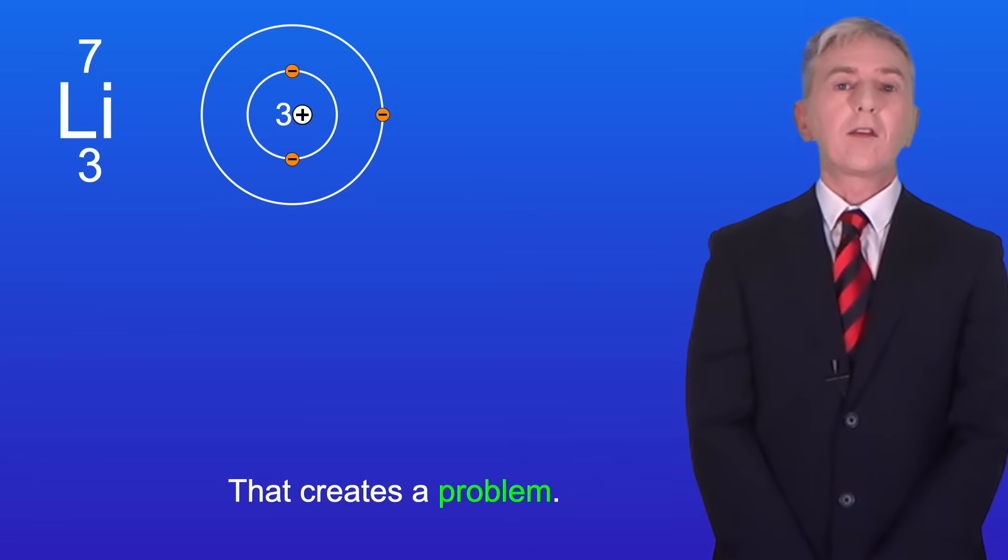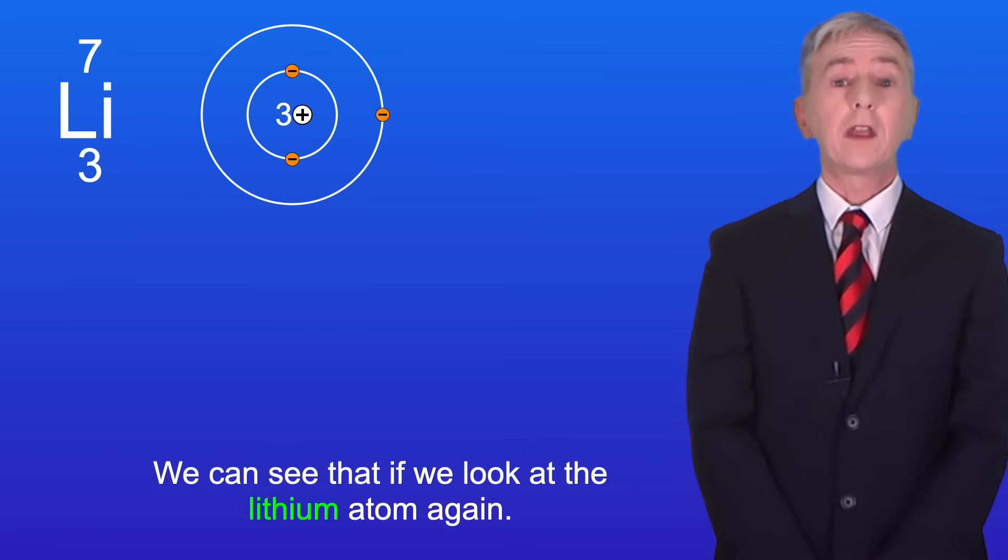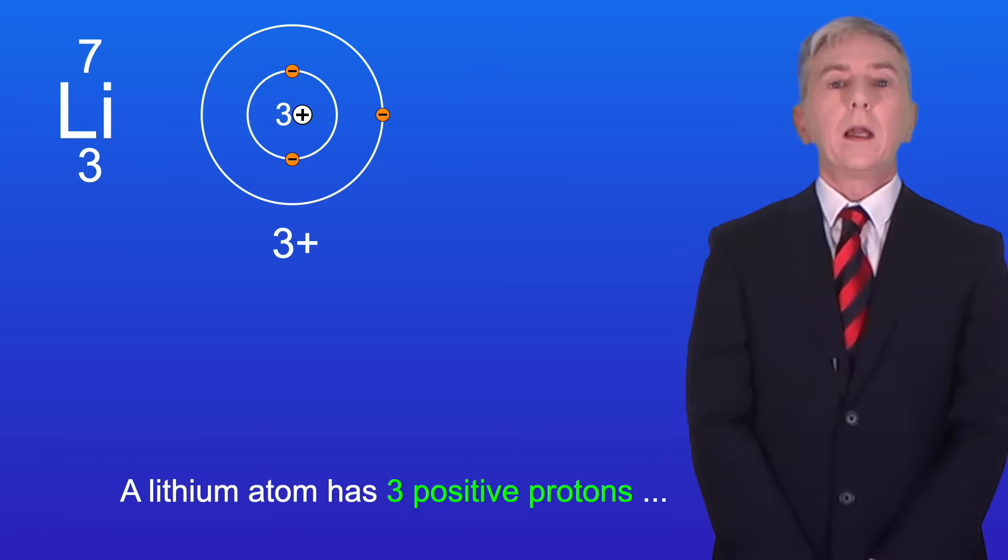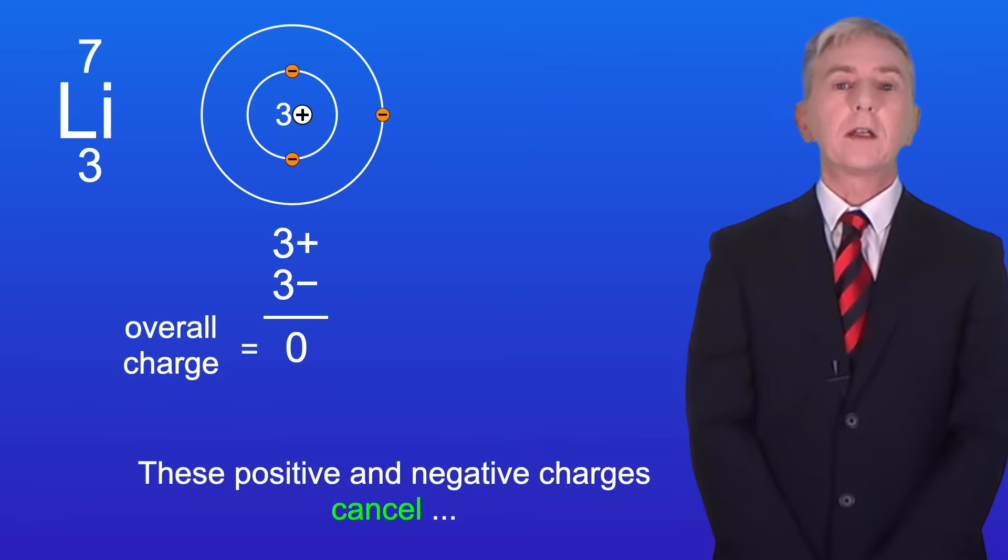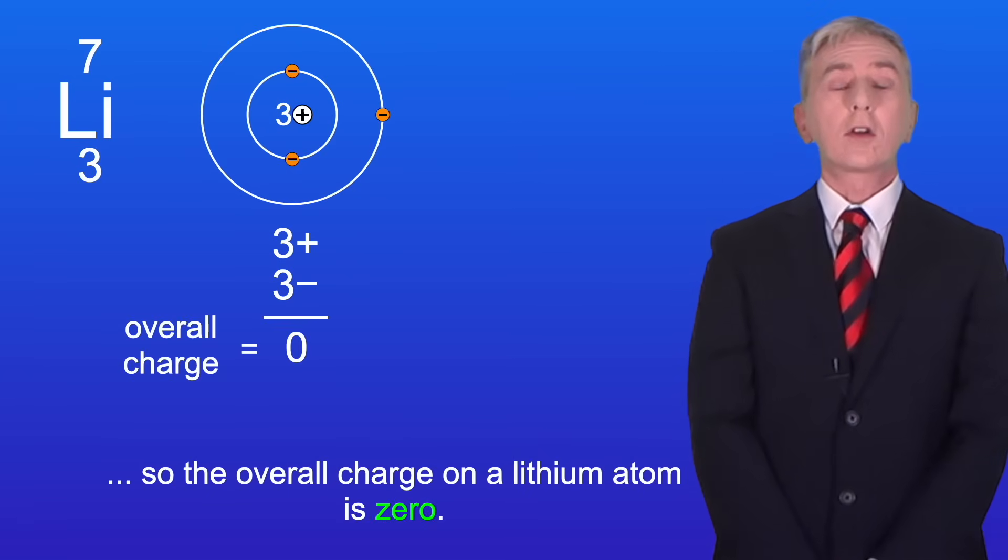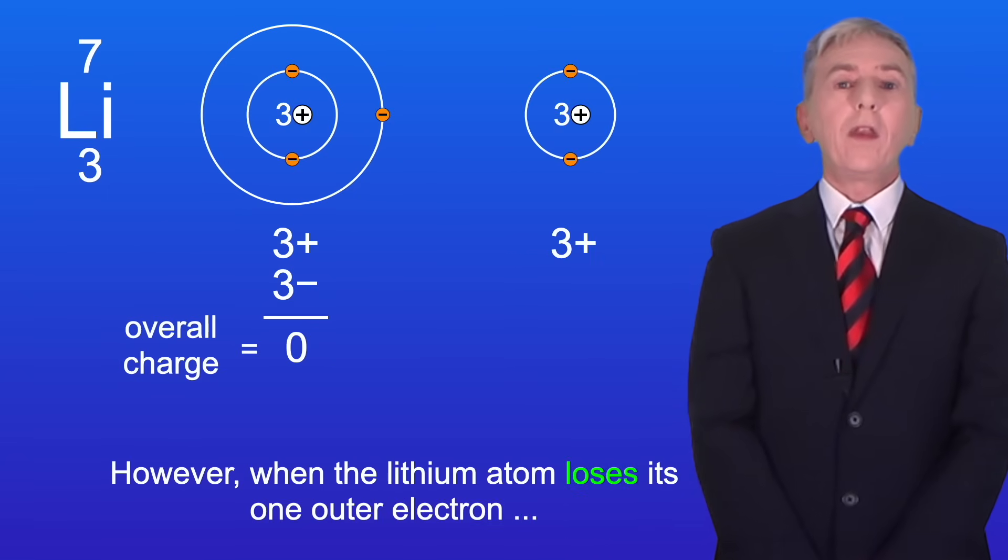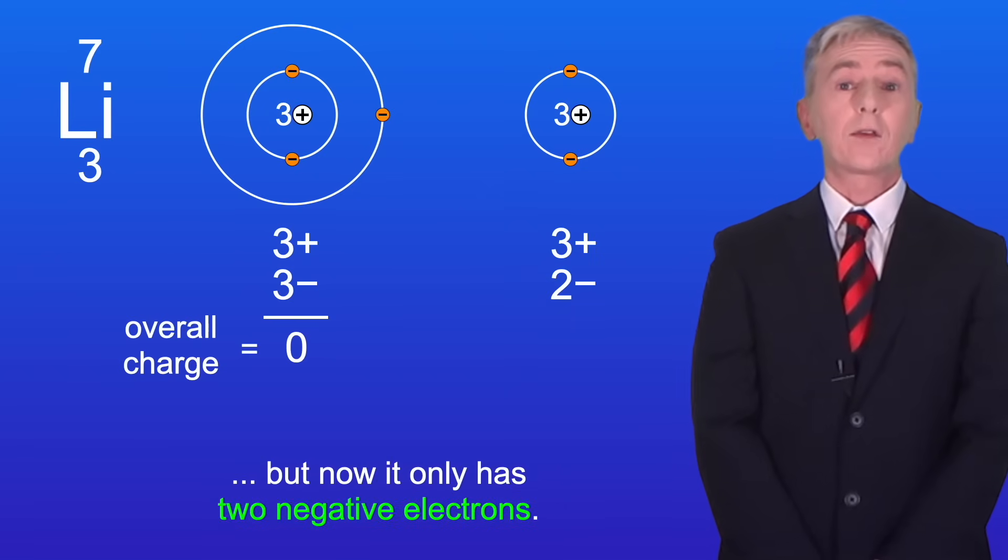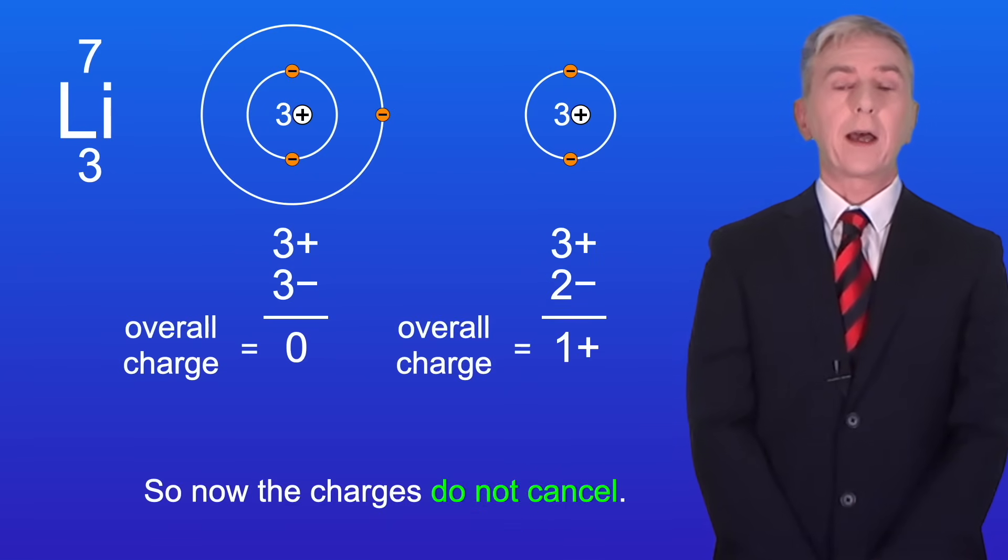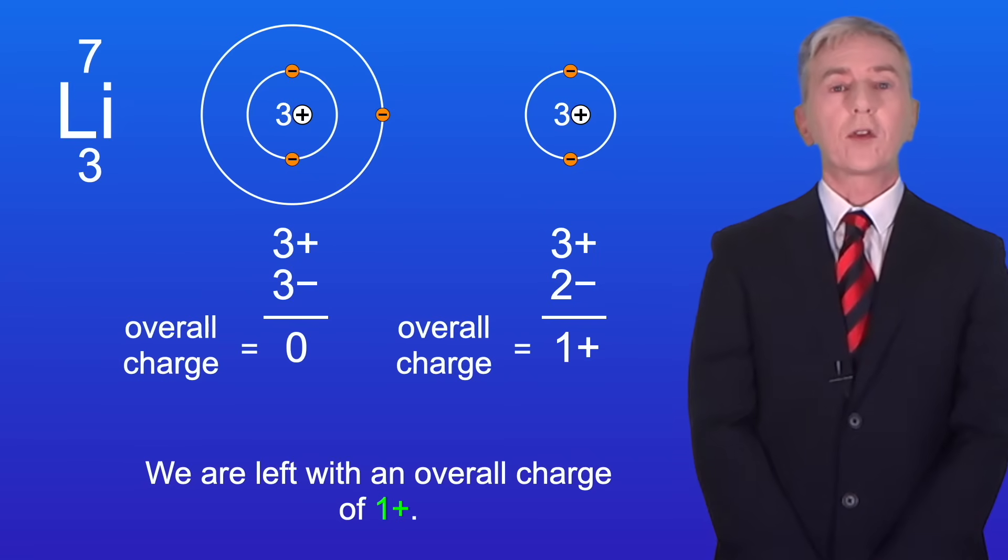Now that creates a problem and we can see that if we look at the lithium atom again. A lithium atom has 3 positive protons and 3 negative electrons. These positive and negative charges cancel, so the overall charge on a lithium atom is 0. However, when the lithium atom loses its 1 outer electron, it still has 3 positive protons in the nucleus, but now it only has 2 negative electrons. So now the charges do not cancel and we're left with an overall charge of 1 positive.